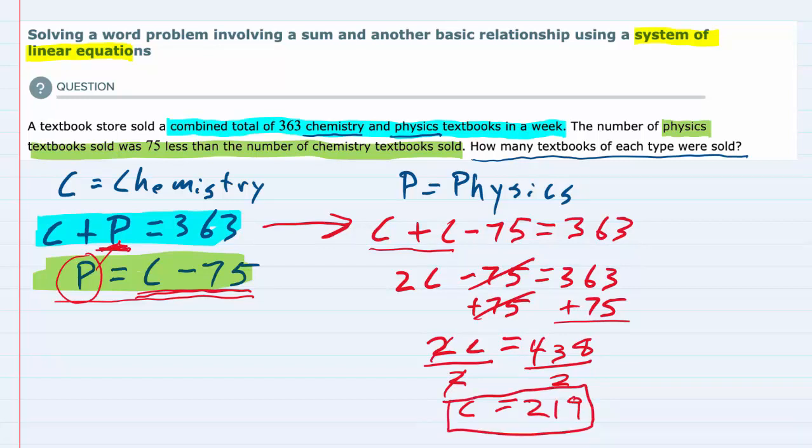So we are halfway there. We have found the number of chemistry books, 219. But we also need to know the number of physics books. Looking back at our original equations, this second one here was already solved for P.